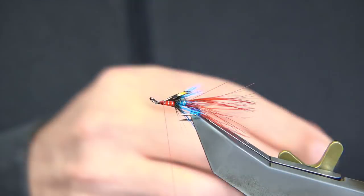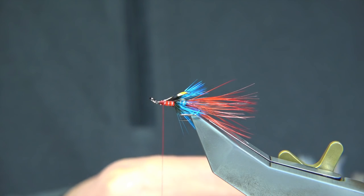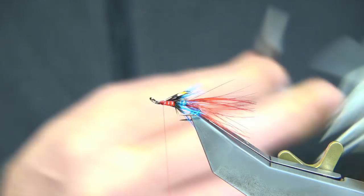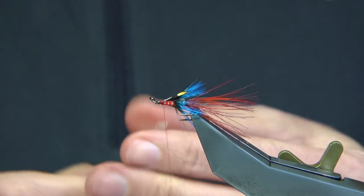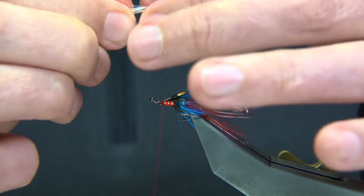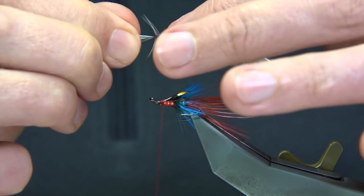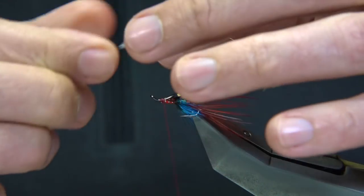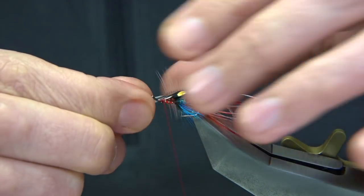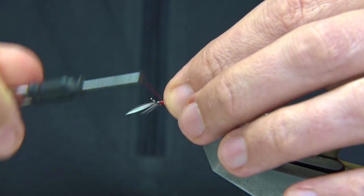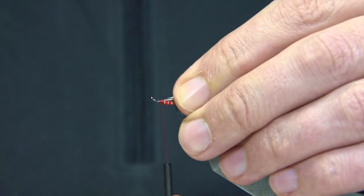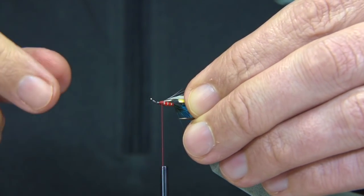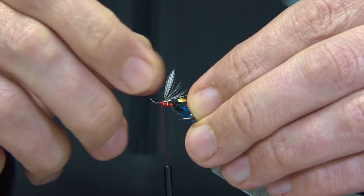Badger hackle. Nice, clean. Lovely hackles, these. Again, just draw back the fluff. You don't need it. Tie them in by the tip again. Draw back the fibers with the good side of the hackle facing yourself. Draw back the tip. Tie over it. Slide your fingers back. Then you can break that off.